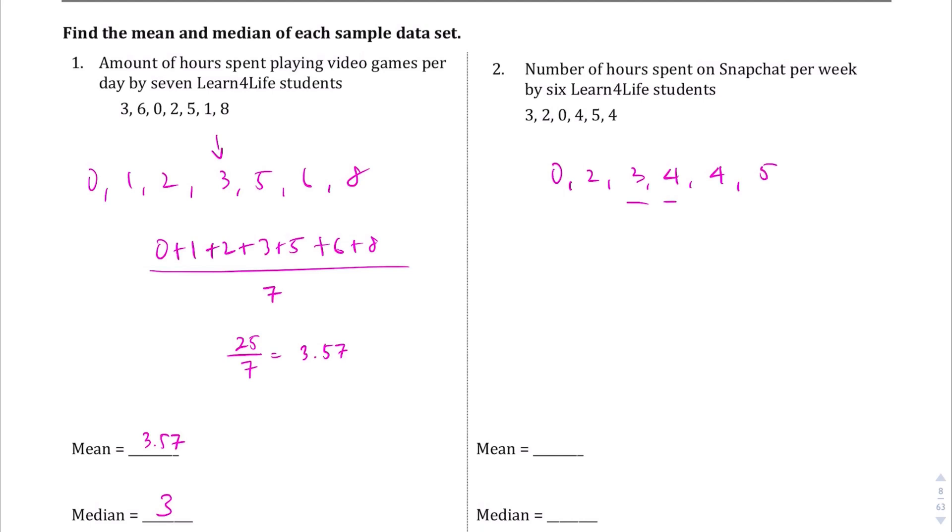And in this case, the two middle numbers are, there's an even number of items here. So, the two middle numbers are 3 and 4. We're going to take the average of that, so halfway between 3 and 4 is 3.5. So, our median is going to be 3.5.